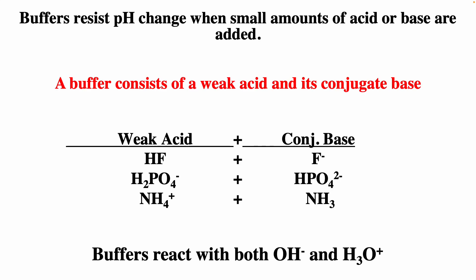Buffers resist pH change when small amounts of acid or base are added. It's just a weak acid plus conjugate base. So HF and F⁻, dihydrogen phosphate and hydrogen phosphate, the ammonium ion and ammonia — these all can form buffer solutions. You just need a weak acid and its conjugate base.